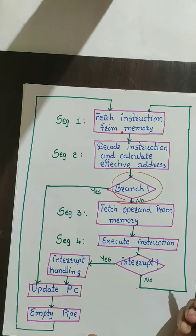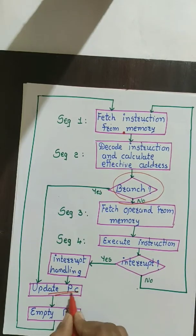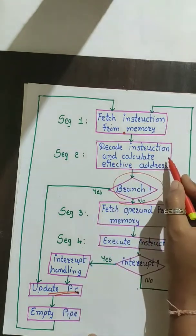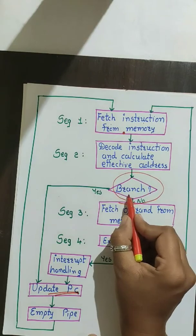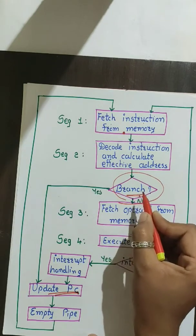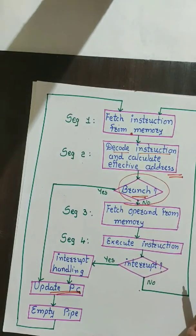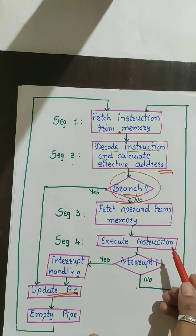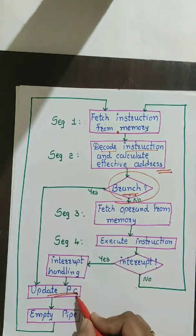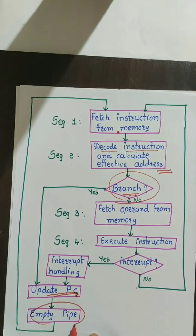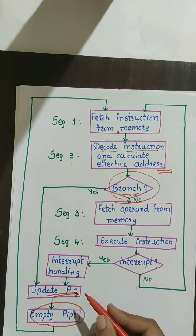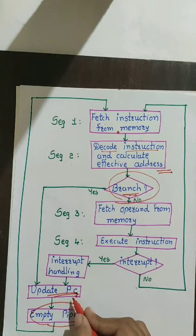Further execution will start from that particular location. We need to update the program counter — segments one and two will do that work. We can only determine whether there is a branch instruction after segment two, because it is only after decoding the instruction that we know whether it is a branch instruction. If it is a branch instruction, we need to update the program counter and then empty the pipe — I will explain why with the time-space diagram example.